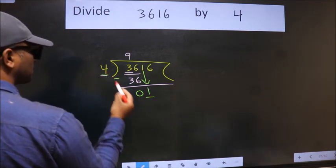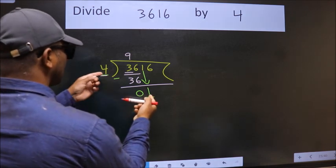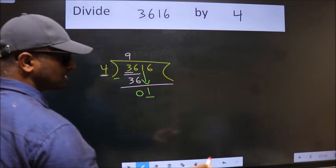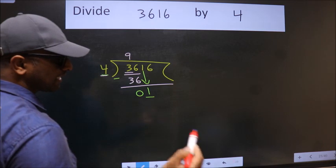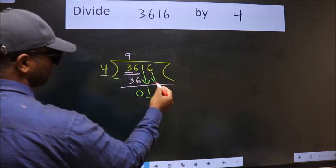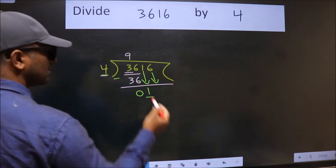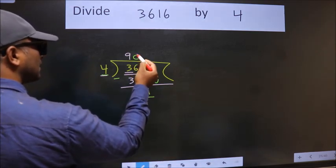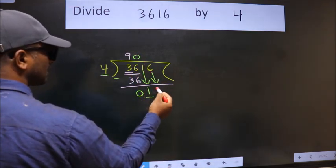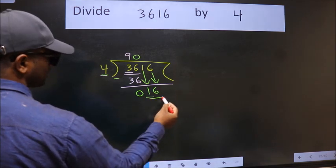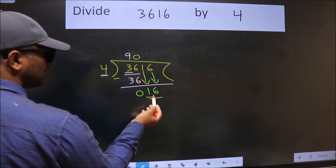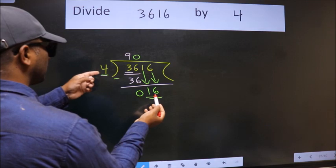Now here we have 1, here 4. One is smaller than four, so we should bring down the second number. And the rule to bring down the second number is: put zero here, then only we can bring this number down. So, 16—when do we get 16 in the four table?